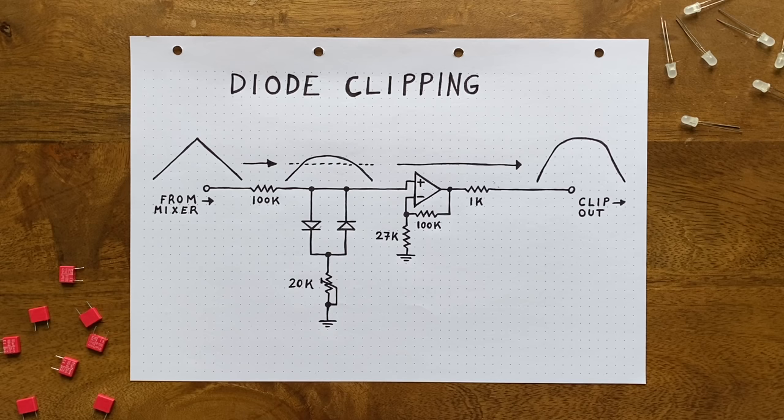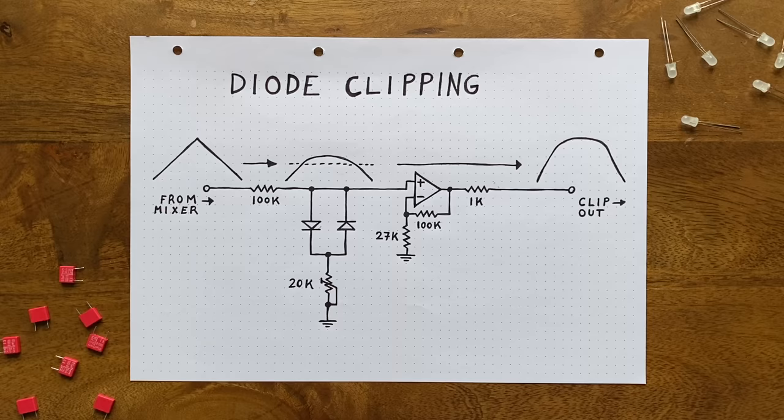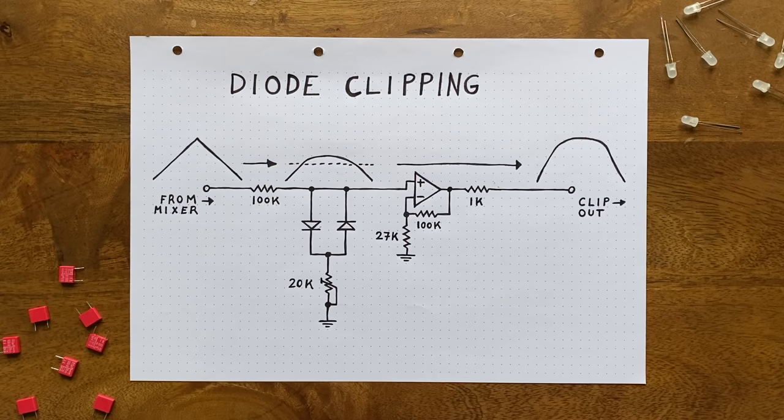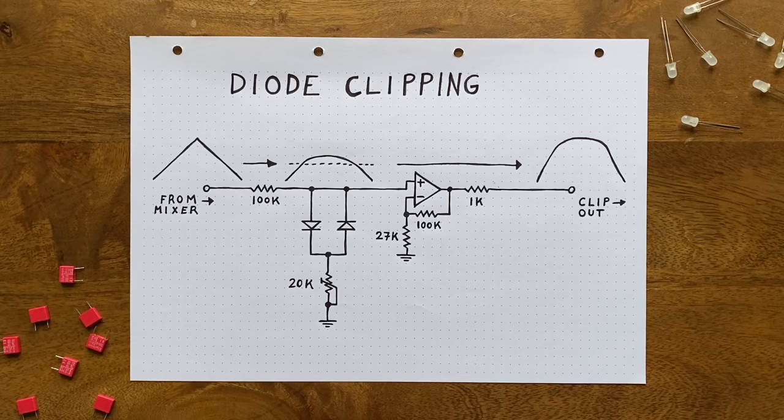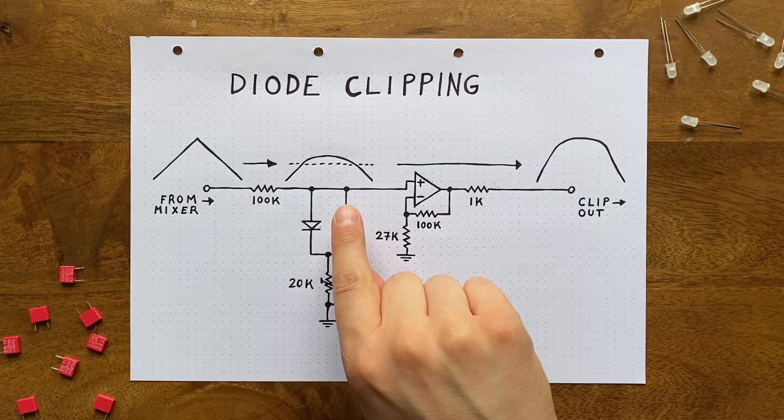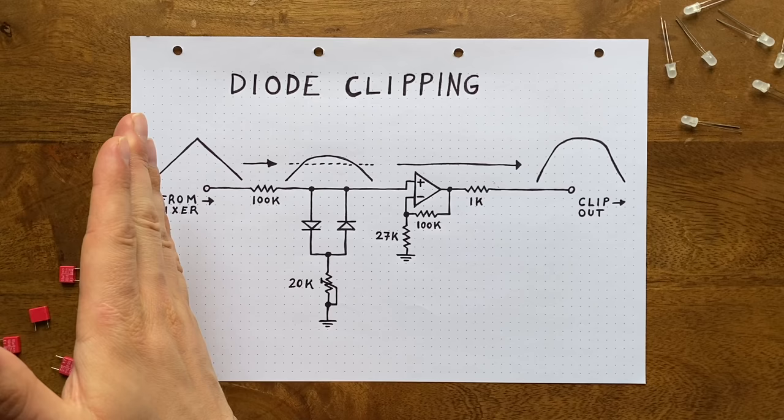We're essentially cutting off any part of our waveform that's above this threshold line. And because the diode opens up somewhat gradually, the resulting edge will be slightly rounded. Hence the soft in soft clipping. As you might have guessed, the other diode pointing upwards from the trimmer serves exactly the same purpose, but for negative voltages. It opens up once the op-amp pulls hard enough, clipping the lower half of our output waveform.